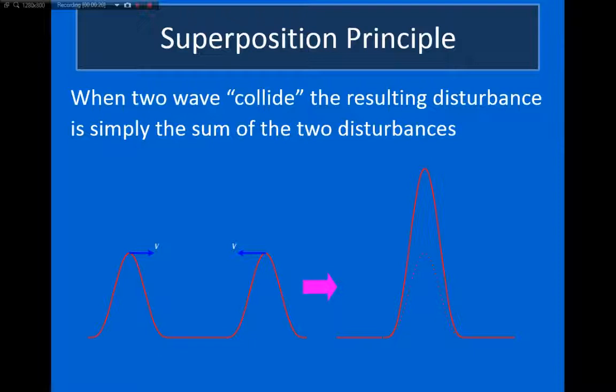To illustrate this, I have two waves drawn here at the bottom. I have this wave on the left that's moving towards the right, and this wave on the right that's moving towards the left. When these two waves meet up in the center, we can see that the resulting disturbance is just equal to the sum of the two disturbances. So we have this peak that's twice as high.